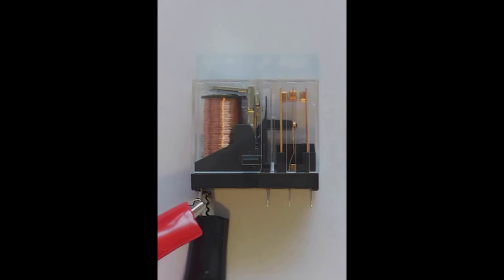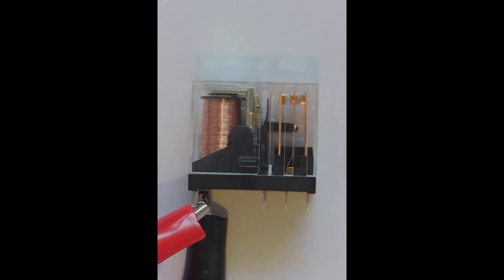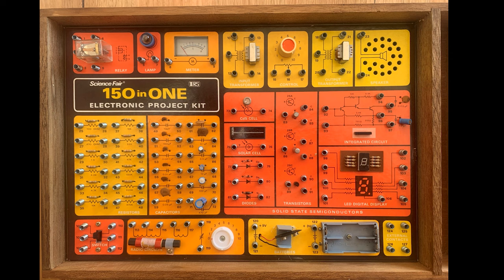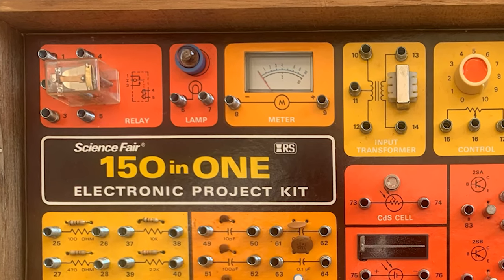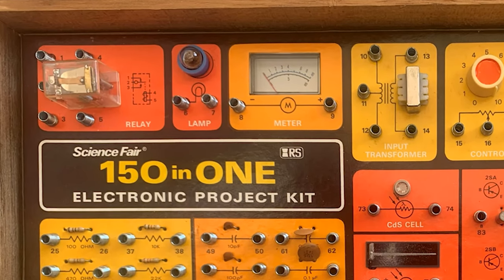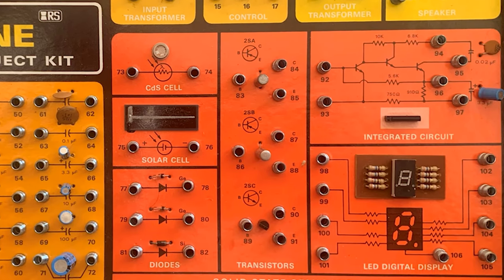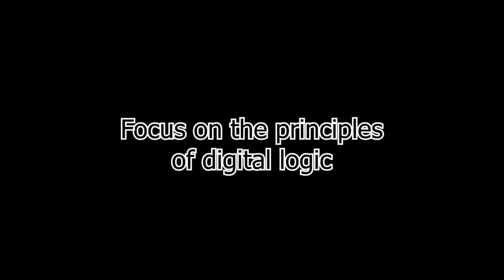You might be wondering why I've introduced relays, when ultimately we're going to be using transistors and silicon chips. Well, I remember back in the day, I had a Tandy 150-in-1 electronics kit. Tandy was the Australian subsidiary of Radio Shack in the US. I clearly remember understanding how relays and light globes worked when I was quite young, maybe 9 or 10. I understood these many years before I really understood how transistors and silicon chips work. At this stage, I want to keep the electronics as simple as possible, because it's the principles of digital logic and gates that I want you to focus on for now.